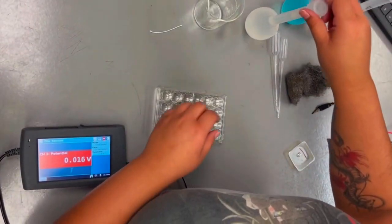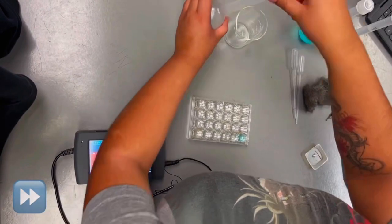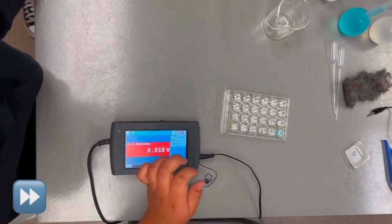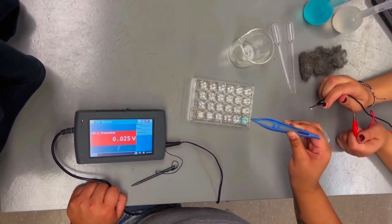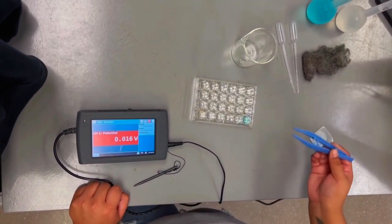Construct a salt bridge using one of two salt solutions, copper sulfate or potassium nitrate. Put a small amount of solution into a beaker, then soak the string. Once done, put one end of the string in both wells, making sure it is submerged in the solution.